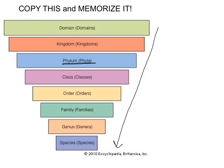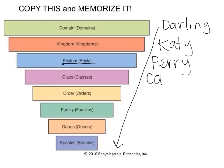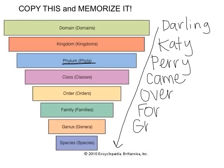What I would like you to write is a device to help you remember this order. You are going to be tested on the actual order: domain, kingdom, phylum, class, order, family, genus, species. One of the ways our class always does this is with an acronym: Darling Katie Perry came over for great soup. If you can't remember it this way, you're welcome to come up with something different — just make sure it's in the same order.